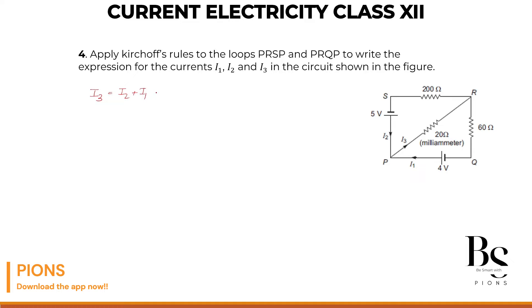Right, so I3 is nothing but I2 plus I1. Point P is a junction. Current entering the junction must be equal to the current leaving the junction. Right. Now, secondly,